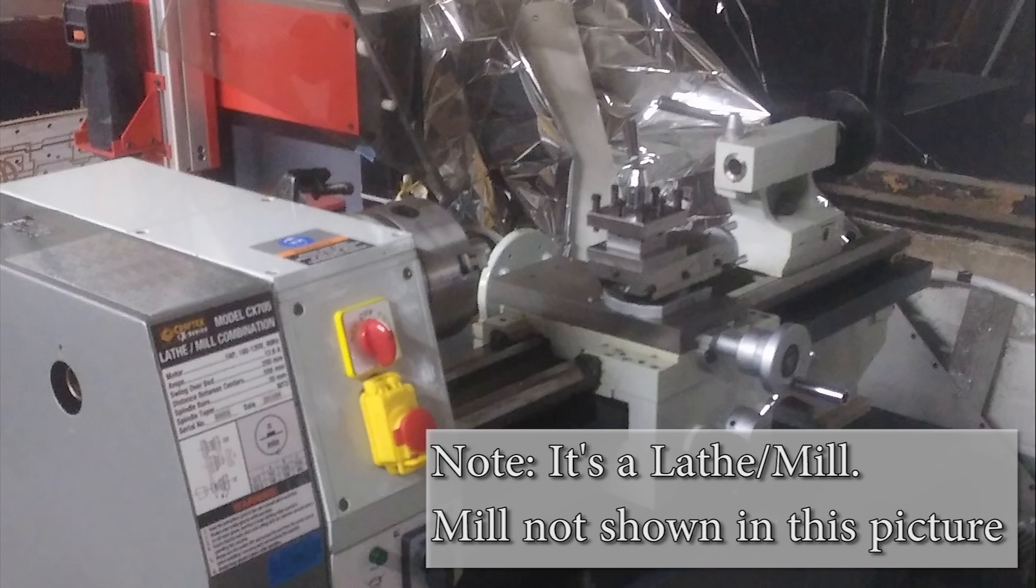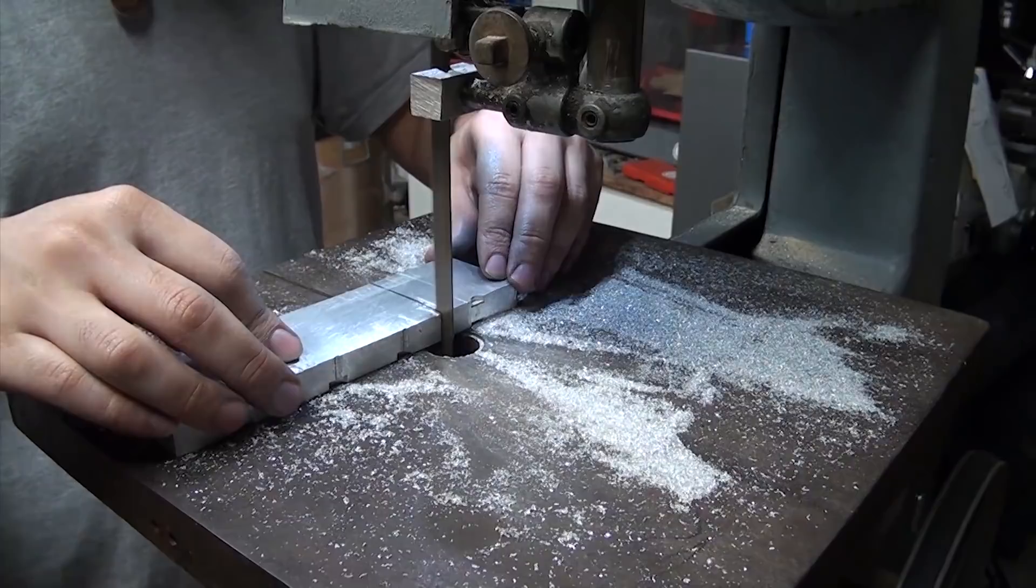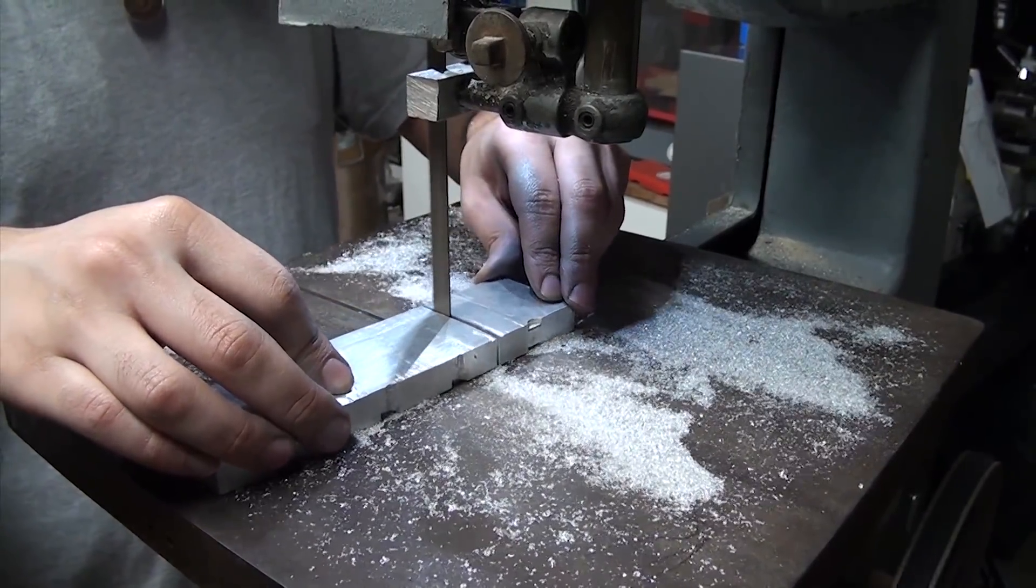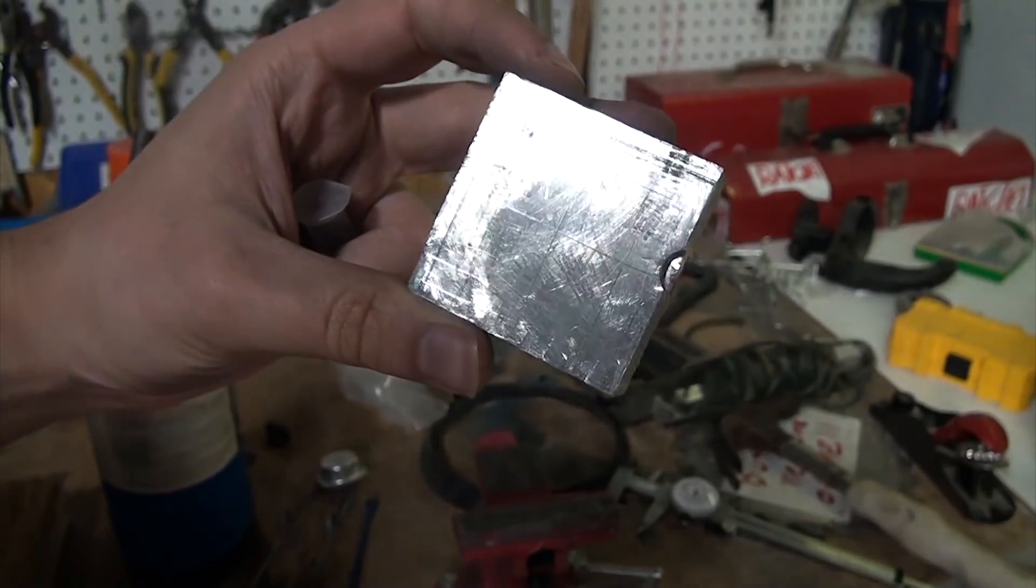And ideally I'd have preferred to use some thicker stock to start with so I could just drill one set of holes. Once things were mostly flat, I cut two sections that'll stack to make the final block. I spent a bit more time flattening things best I could, and then it was time to drill the holes.